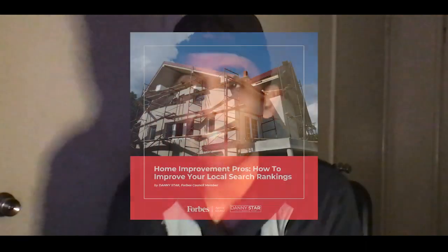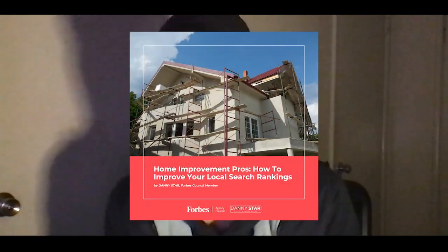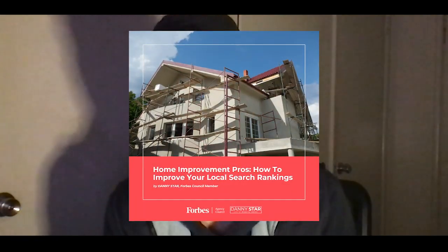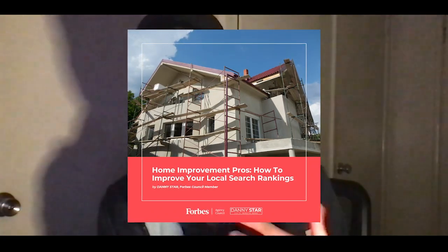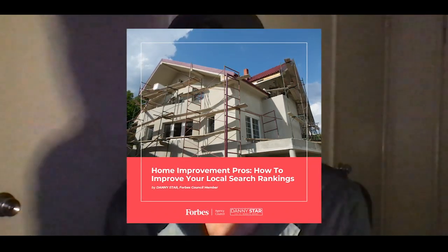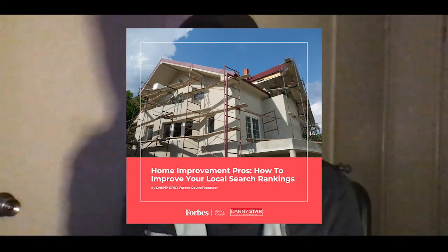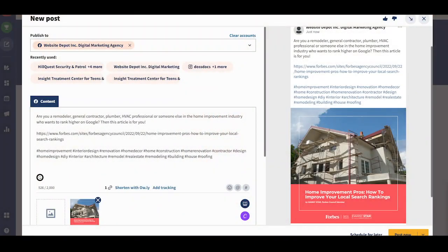I grab the logos, put them in, and there you have it — a nice 1080 by 1080 post that looks really professional and presentable, something you're proud to share. Then you want to open up Hootsuite or Sendable, or wherever your accounts are connected, add the photo, and also grab an excerpt from the article.